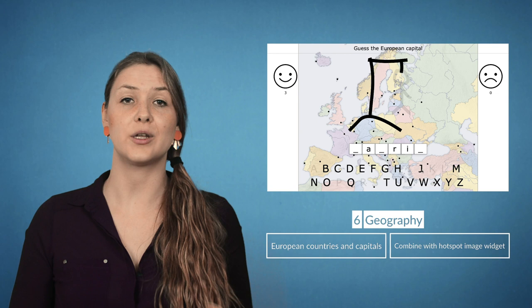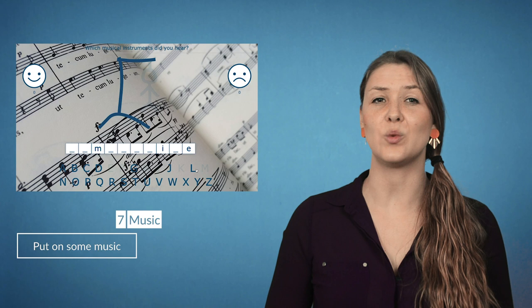Start your lesson by playing a piece of music in which your students can hear a lot of musical instruments. Let them play the hangman widget and look for the instruments they could have heard.